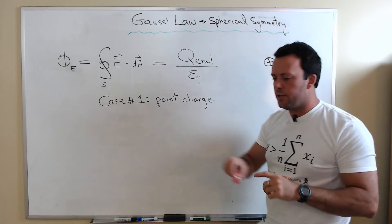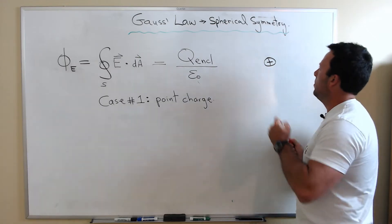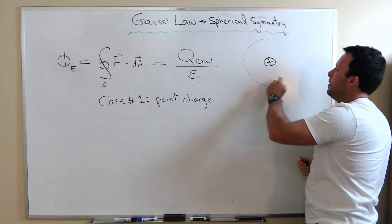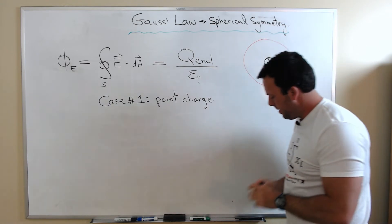What I want to do now is choose a Gaussian surface that reflects the symmetry of the object that I'm considering. So in this case I'm going to choose a sphere. The sphere is going to have a radius R, and now I want to look at how do I actually evaluate the left-hand side of Gauss's law.